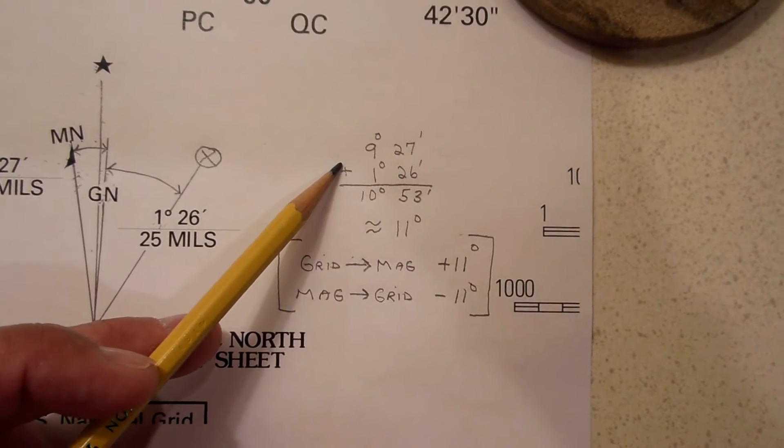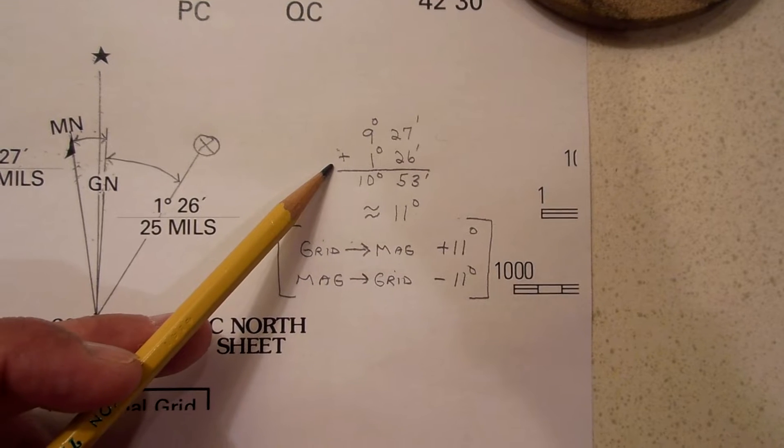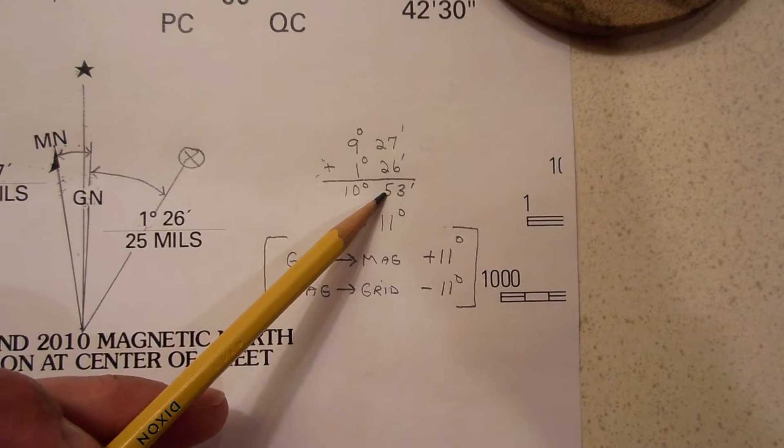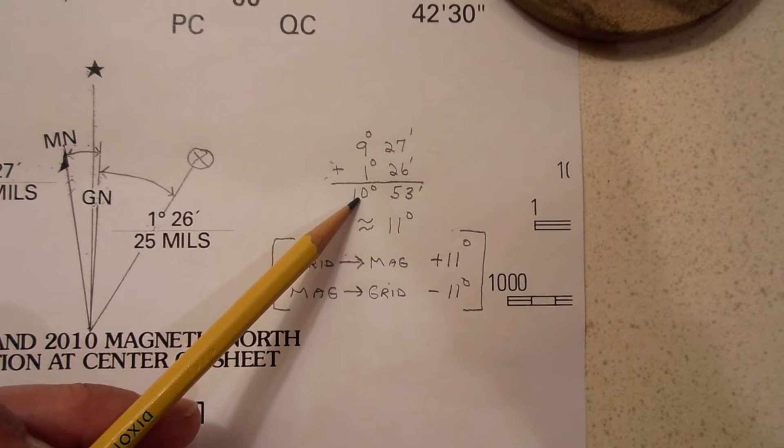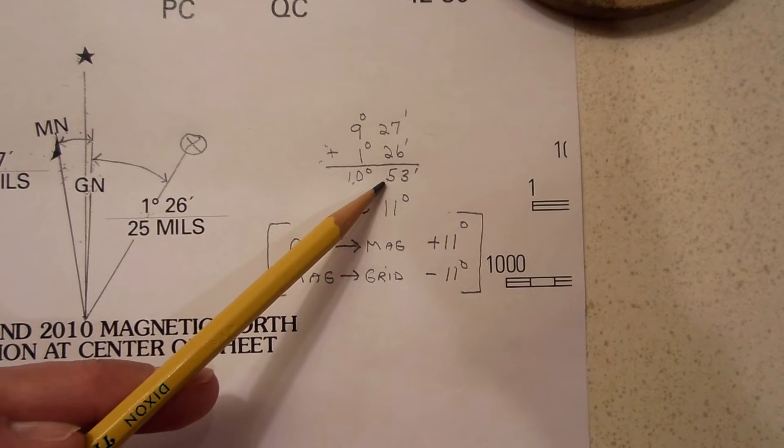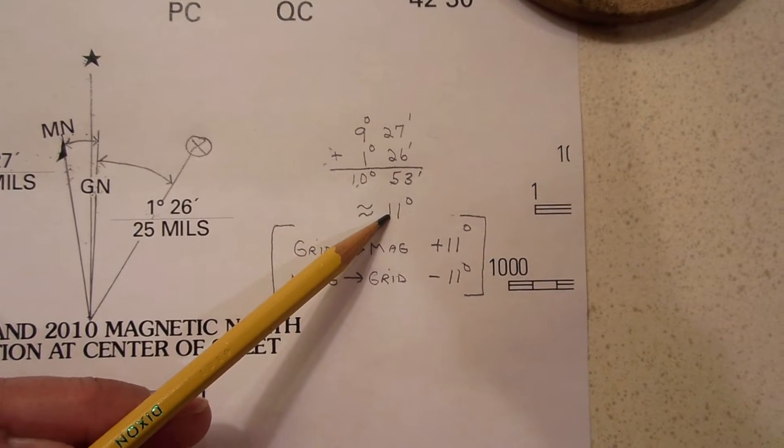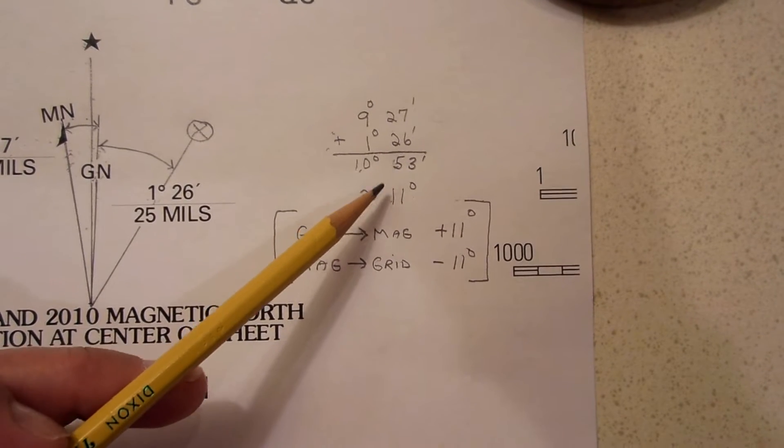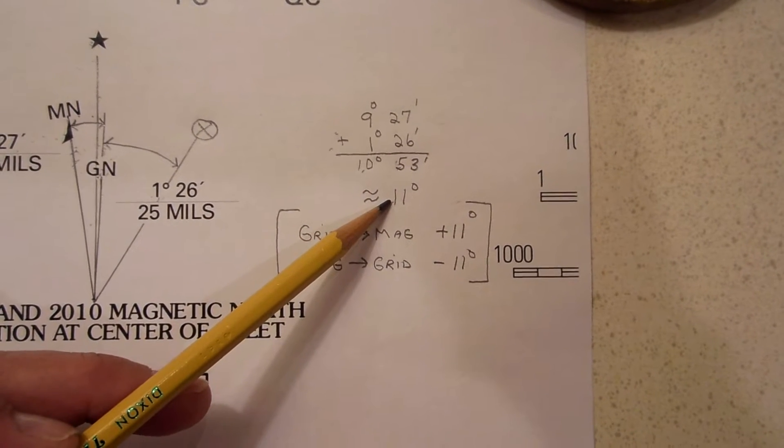So here's 9 degrees 27 minutes plus 1 degree 26 minutes. You add the minutes up, that's 53 minutes. You add the degrees up. So you've got 10 degrees and 53 minutes, which is approximately 11 degrees, because there's 60 minutes in a degree. So let's just call this 11 degrees.